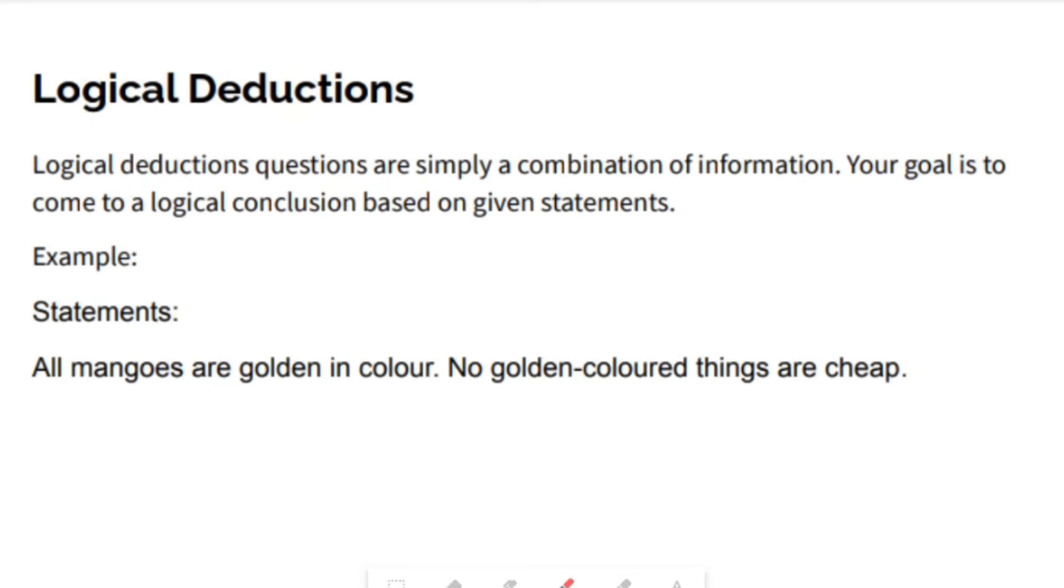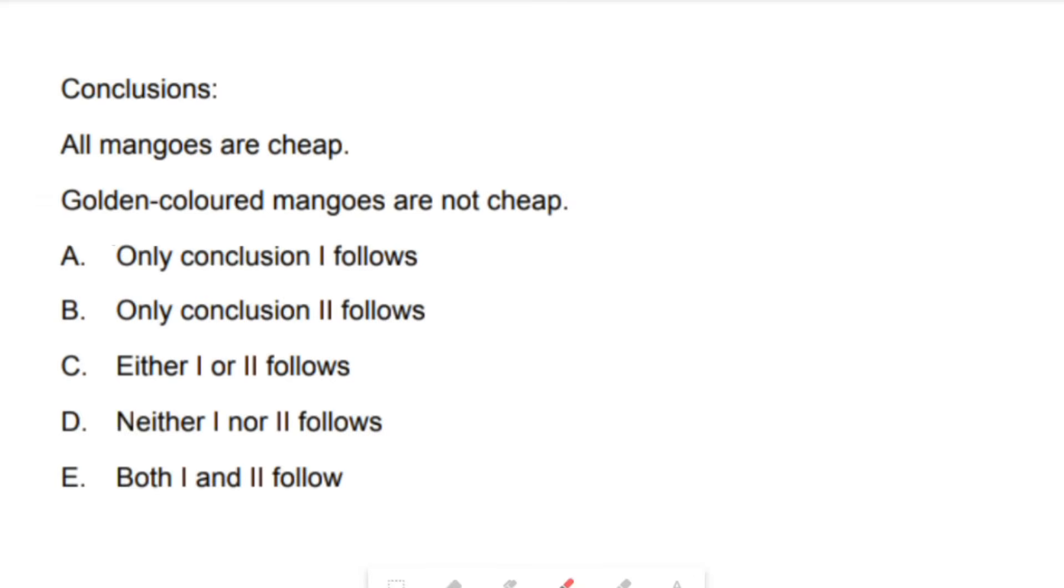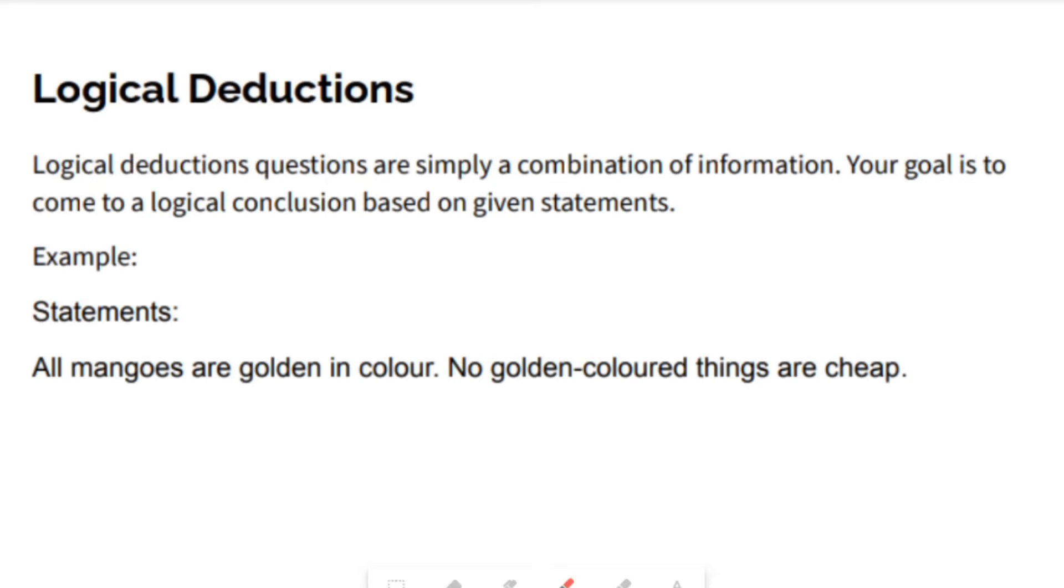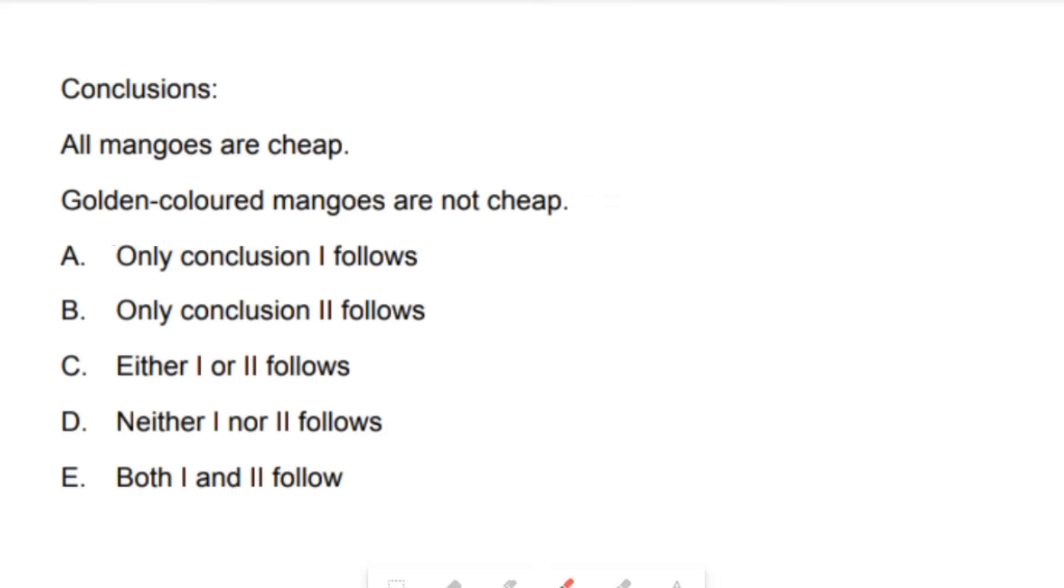Logical deduction questions are simply a combination of information. Your goal is to come to a logical conclusion based on given statements. The statements in a question. All mangoes are golden in color. No golden colored things are cheap. The conclusions are, all mangoes are cheap. Golden colored mangoes are not cheap. You'd have to ask yourself if these conclusions match. Is it only conclusion one that follows? Only conclusion two that follows. Either one or two follows. Neither one or two follows. Both one and two follows. The conclusions repeat again. All mangoes are cheap. Golden colored mangoes are not cheap. Let us look back at the statements. All mangoes are golden in color. No golden colored things are cheap. So, based on that, our correct conclusion would be that golden colored mangoes are not cheap. So, that would mean that only conclusion two follows.